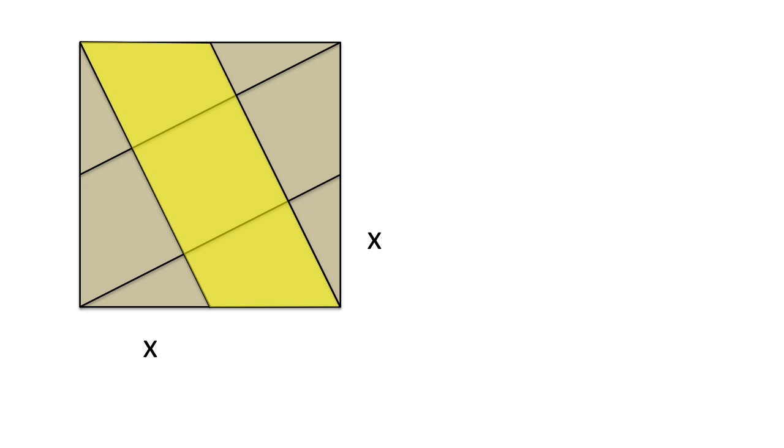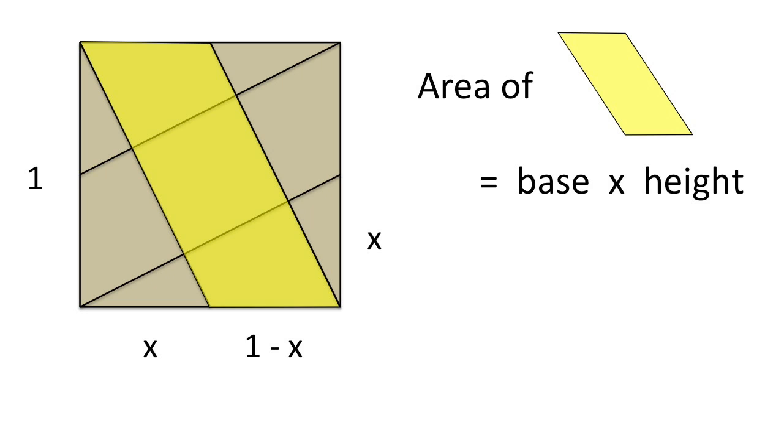Let's find the area of this parallelogram in two different ways. You know that the area equals the base times the height. Here the base is 1 minus x, and the height is 1, so the area is 1 minus x.